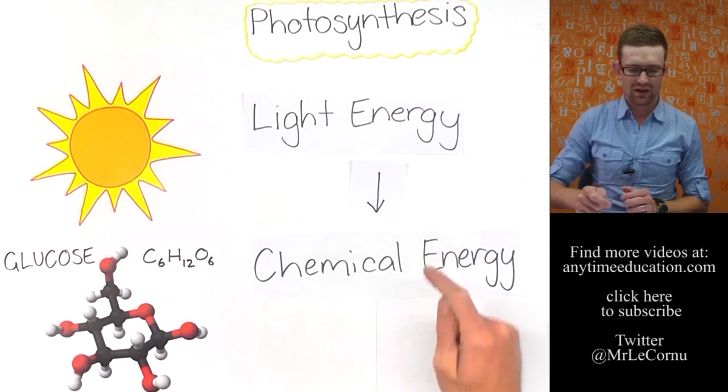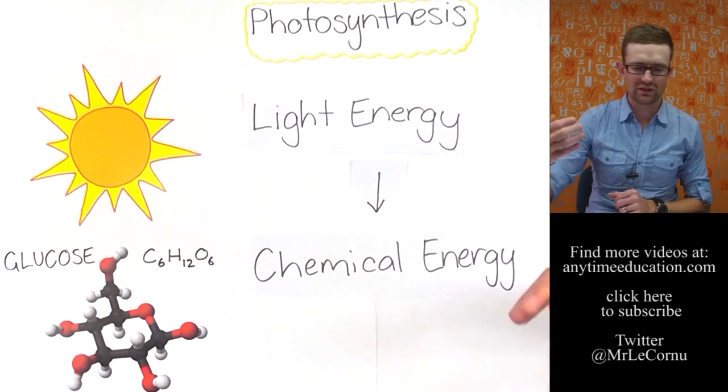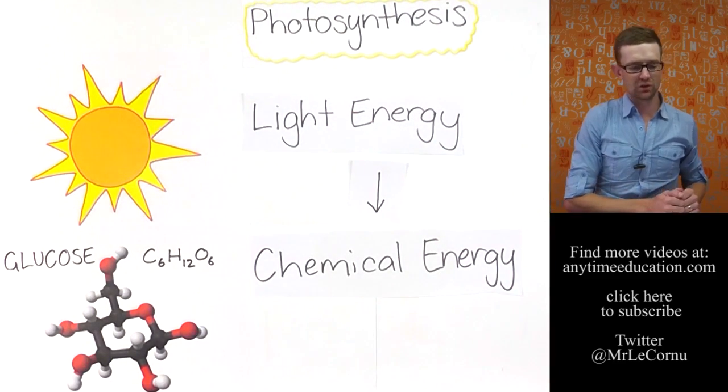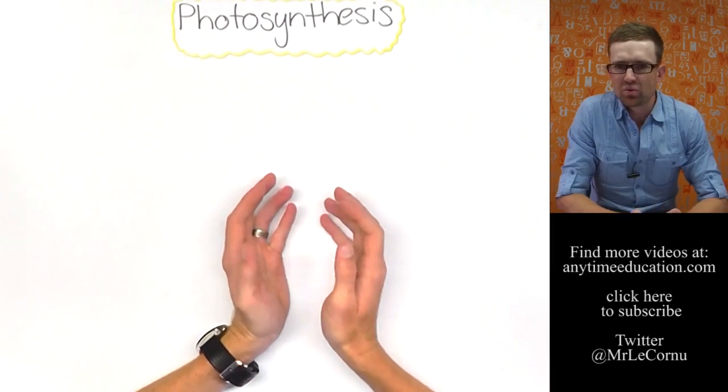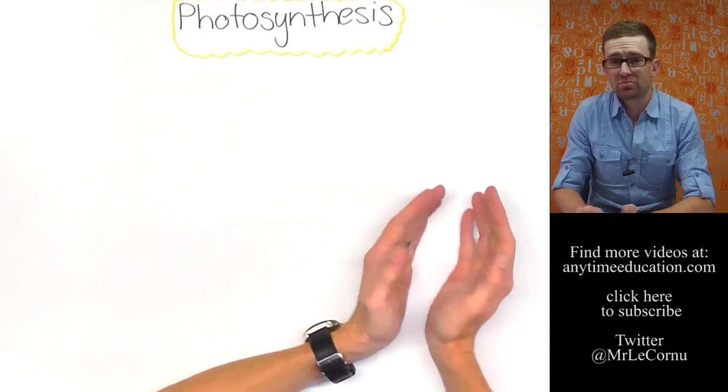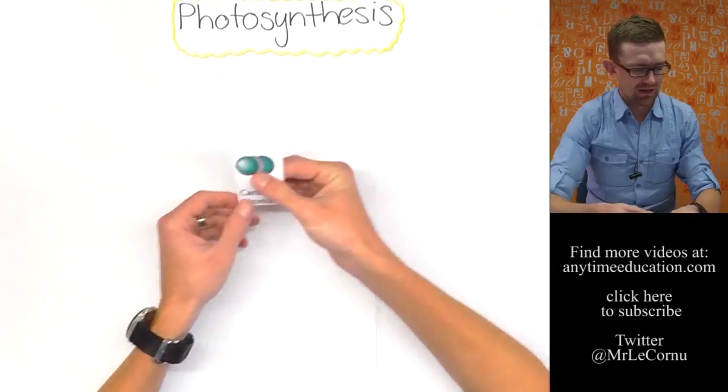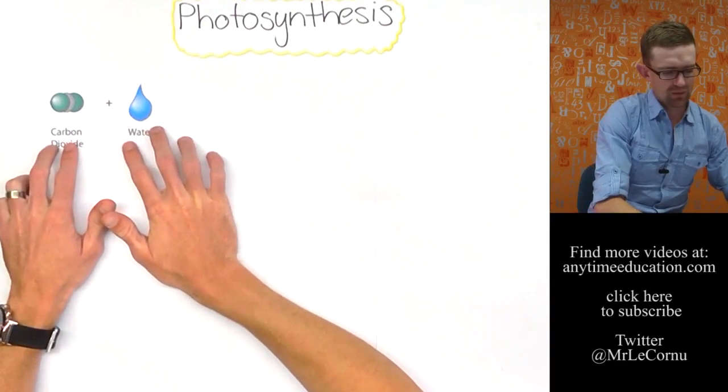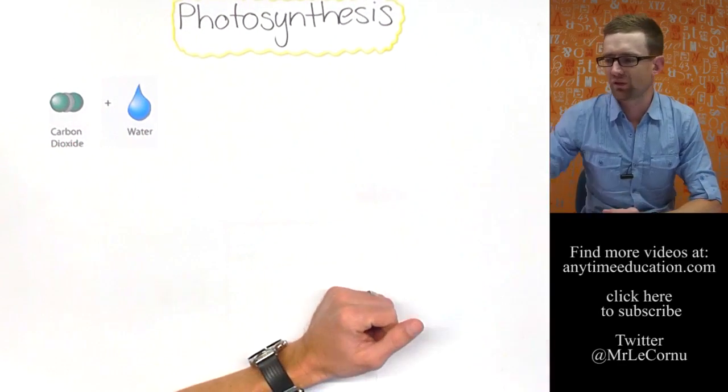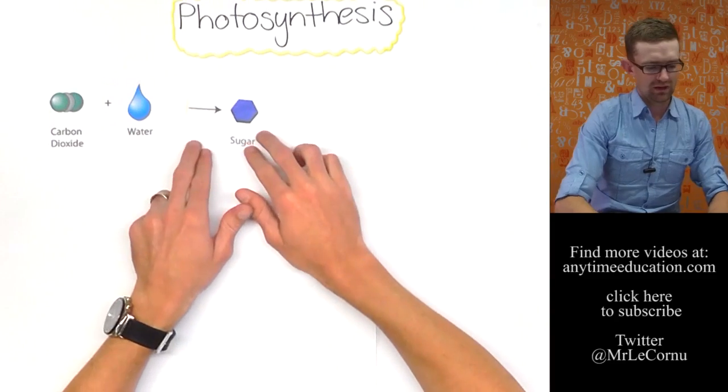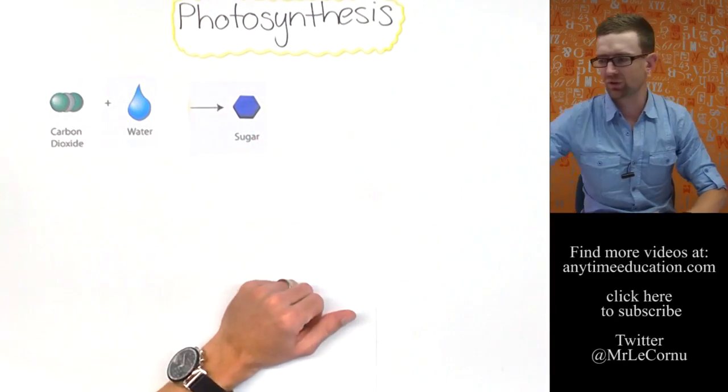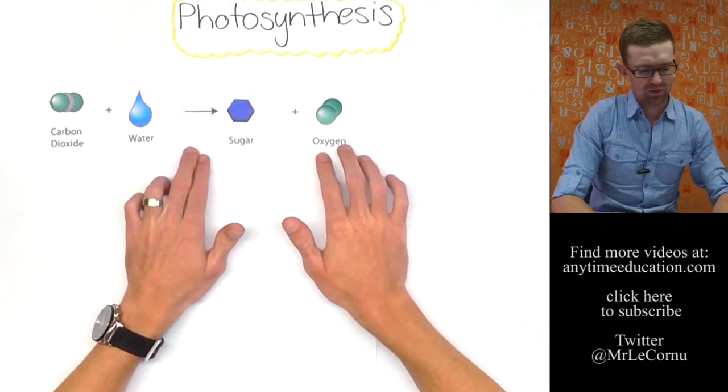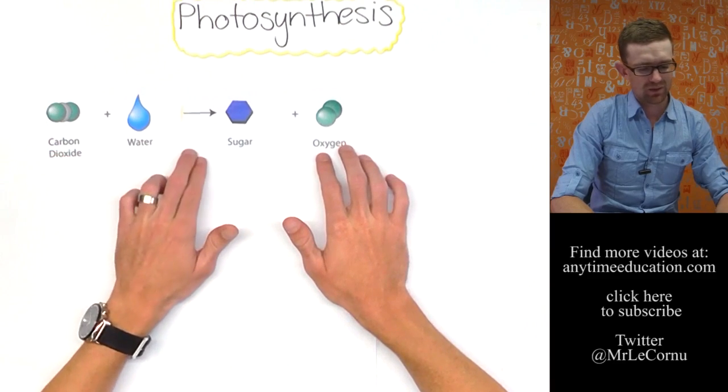So let's actually have a look at how light energy can be used to turn simple inorganic substances into complex organic compounds like glucose. Well first of what are the simple inorganic substances that get used to make glucose. Well they're carbon dioxide and water. Carbon dioxide and water two simple inorganic substances combined can produce sugar, glucose and oxygen.